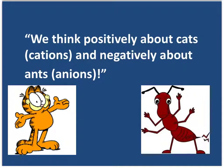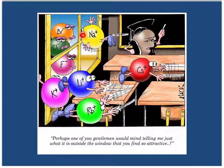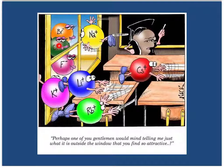To help you think about cations and anions, you think positively about cats and negatively about ants. Now, when we form these ions — these positive ions which we call cations, and these negative ions which we call anions — there is an electrostatic attraction between those. That's what happens when we form an ionic bond between a metal and a non-metal. So sodium is attracted to bromine, chlorine, or fluorine. When they bond because of that electrostatic attraction, they form a chemical bond — we call that an ionic bond.